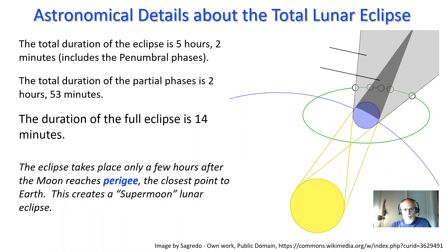The penumbral phases — kind of the shadow of the shadow — are five hours long. So it really takes a long time for the Moon to pass through the entirety of Earth's shadow and the shadow of the shadow coming through that area.